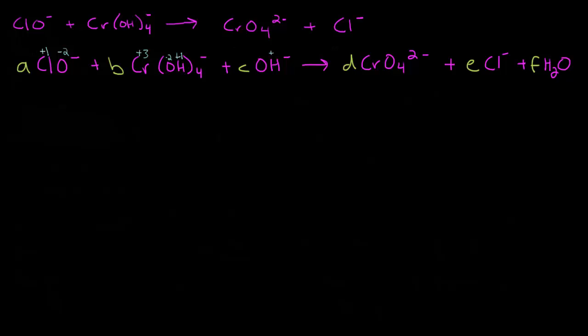For the hydroxide C molecule, hydrogen is plus one and oxygen is minus two. In the D molecule, oxygen is minus two and we have four of those, so that's minus eight, which means chromium has to be in the plus six state. For the E molecule, chlorine is minus one. And for water F, oxygen is minus two and hydrogen is plus one.